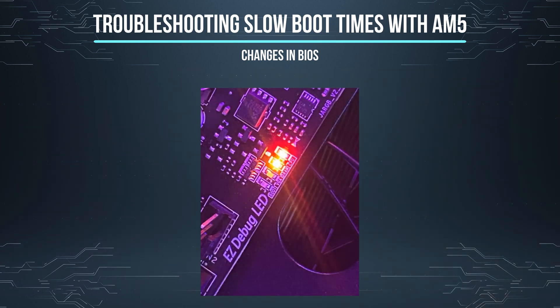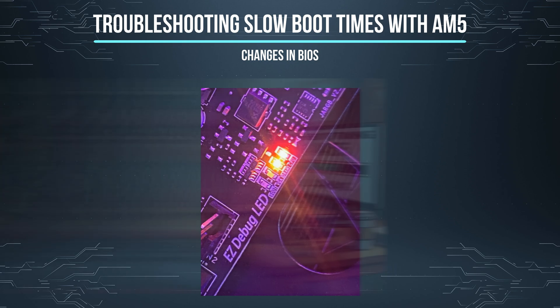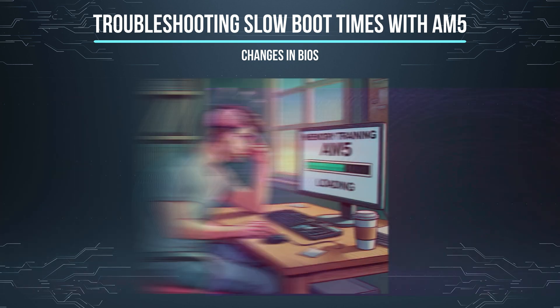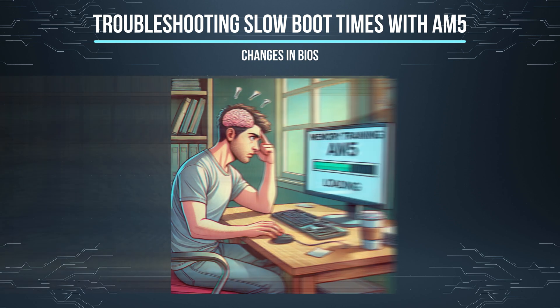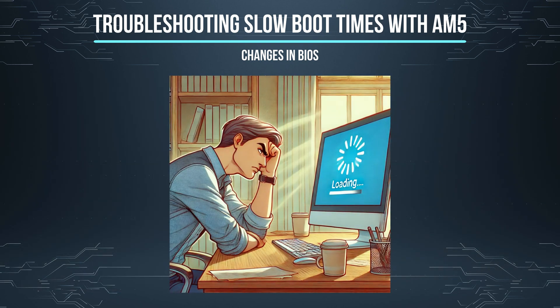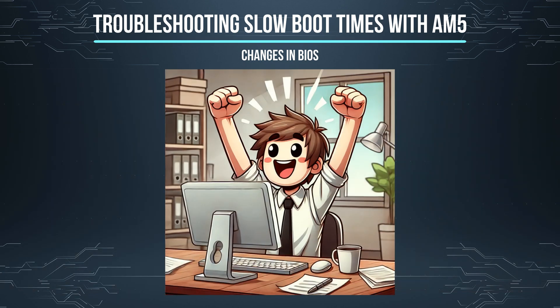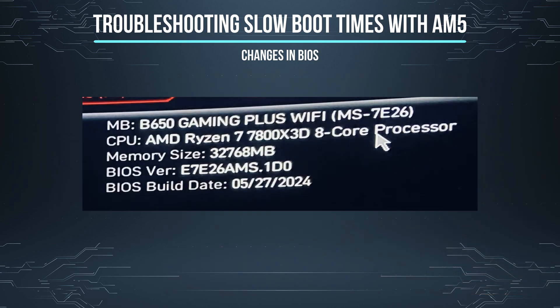Second, troubleshooting slow boot times with AM5. The first time I fired up my computer the motherboard was showing red and yellow indicator lights and I had to wait almost a minute for it to start up. It's normal the first time — it will do memory training. But after a few days I was still waiting a long time to get into Windows. This delay is due to memory recalculating itself every time.